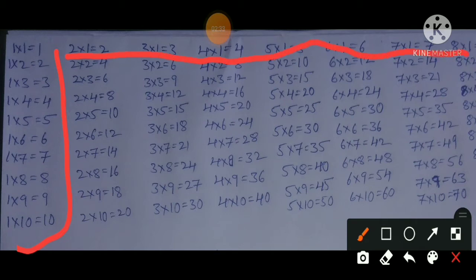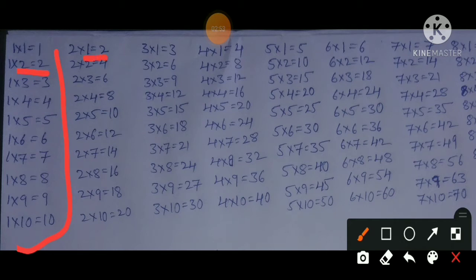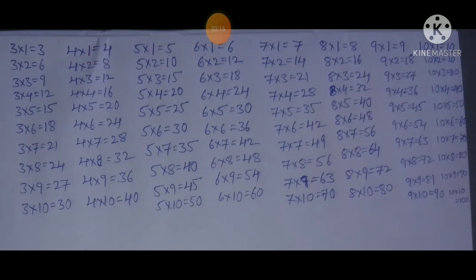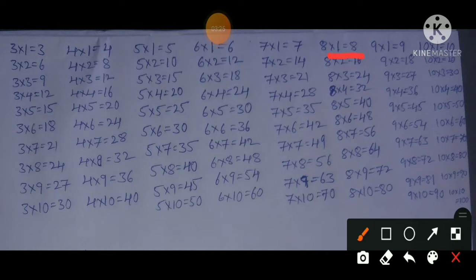For example: 1×2=2 and 2×1=2; 1×3=3 and 3×1=3; 1×4=4 and 4×1=4; 1×5=5 and 5×1=5; 1×6=6 and 6×1=6; 1×7=7 and 7×1=7; 1×8=8 and 8×1=8; 1×9=9 and 9×1=9; 1×10=10 and 10×1=10. That's it.